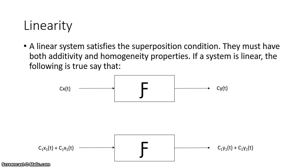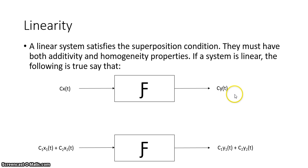Let's start first with linearity. A linear system satisfies the superposition condition, which means the system has both additive properties and homogeneity properties. If we have an input x(t) and output y(t), and we scale that input x(t) by some constant c and send it through a linear system, then the output would be similarly scaled by that same constant.